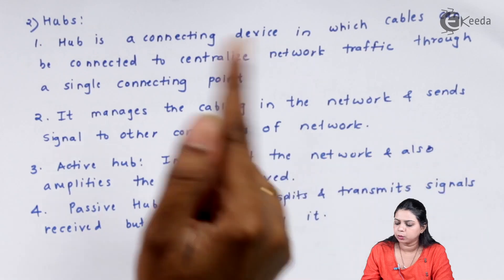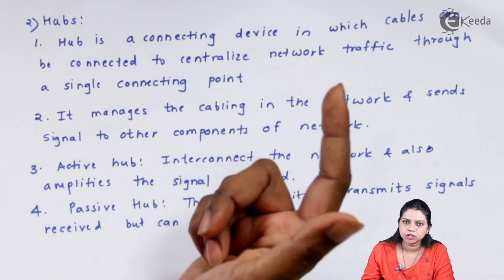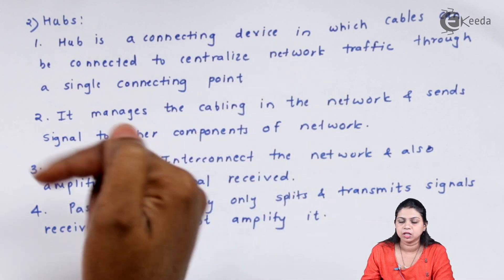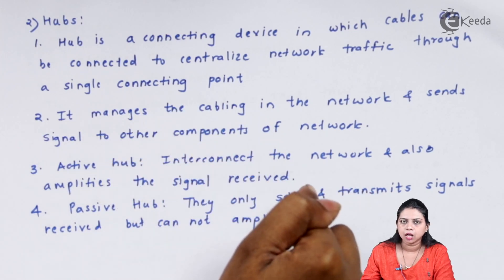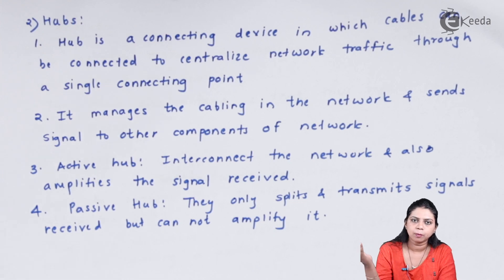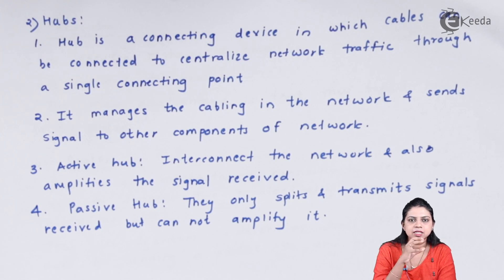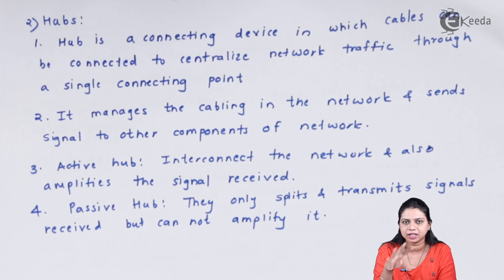Hub manages the cabling in a network and sends the signal to the appropriate component. There are two types of hub: active hub and passive hub. An active hub interconnects the network and also amplifies or regenerates the signal it receives before passing it to the appropriate destination. A passive hub cannot amplify the signal — whatever signal it gets, it sends as-is to the destination.